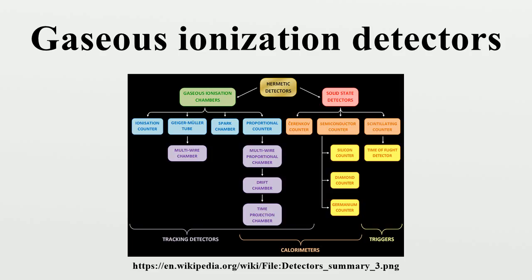The three basic types of gaseous ionization detectors are ionization chambers, proportional counters, and Geiger-Müller tubes. All of these have the same basic design of two electrodes separated by air or a special fill gas, but each uses a different method to measure the total number of ion pairs that are collected. The strength of the electric field between the electrodes and the type and pressure of the fill gas determines the detector's response to ionizing radiation.